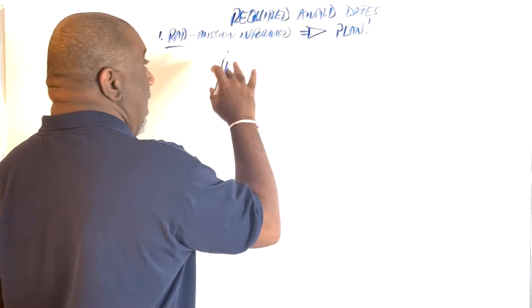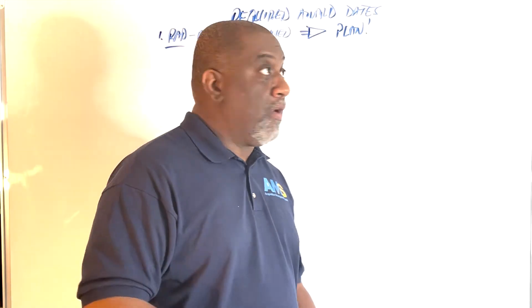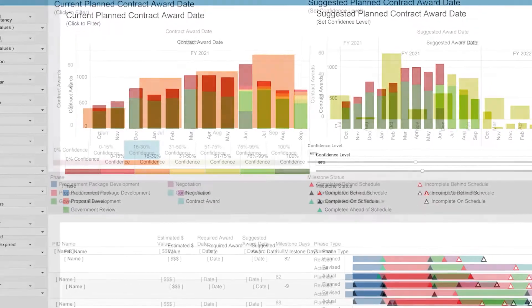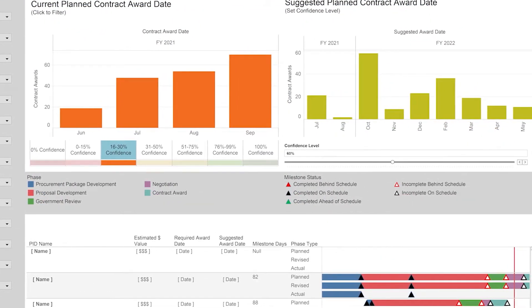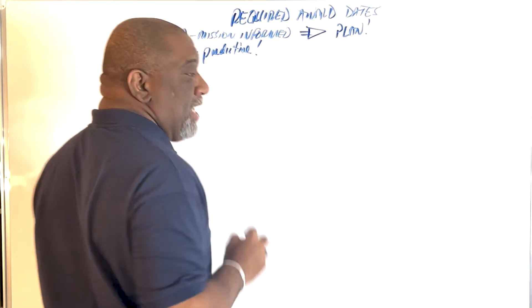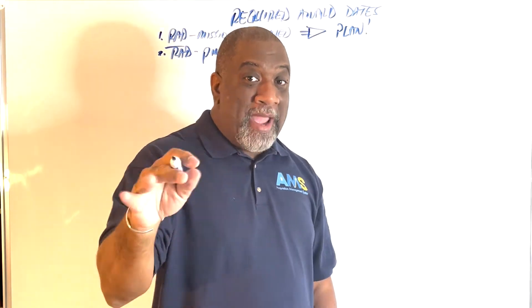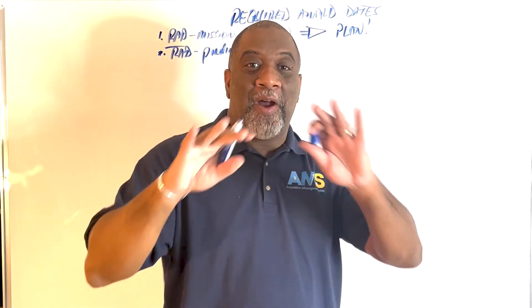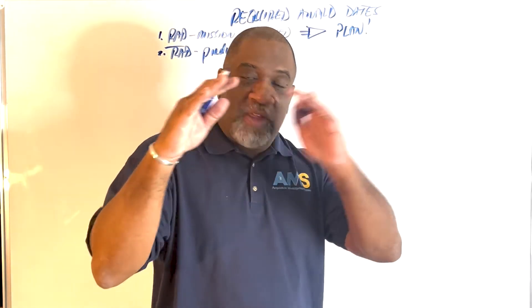Also know that inside AMS, that information is predictive. AMS tells you, gives you a sense of whether your required award dates are actually reflective of reality. It's predictive. The system lets you know, it's like, this plan based on this required award date, there's something wrong. There's something amiss, there's something misaligned, if you will.